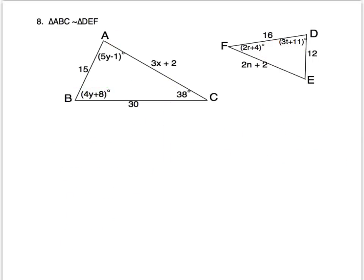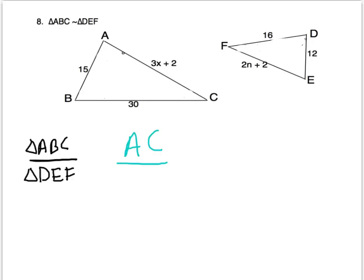So let's ignore the angle information for now. I need to find what x and what n equal. In order to do that, I have to use a known ratio. So let's first solve for x. The side 3x plus 2 refers to AC. So let's use AC as a ratio. I know that AC is the first and third letter of triangle ABC. So therefore, AC corresponds with DF.